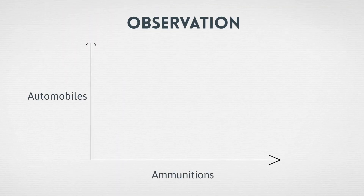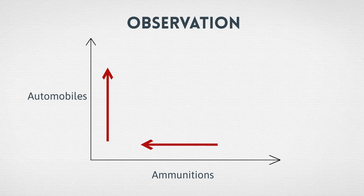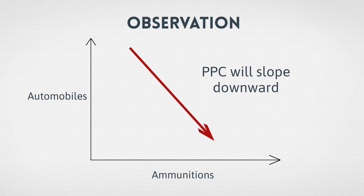The first observation is that since resources or labor is in limited quantity, if an economy wishes to invest more in defense, it has to produce more of ammunitions and reduce the production of automobiles. Thus, the defense industry will require more resources — that is, labor — as compared to the automobile industry. Similarly, if the economy wishes to invest more in automobile industry, it has to reduce the production of ammunitions, because now more resources will be required in the automobile industry. Since there is an inverse relationship between the two goods, this will result in a downward sloping curve.